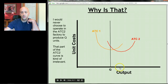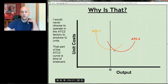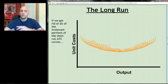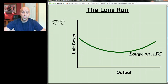Similarly, if I wanted to produce a higher quantity, the cost would actually be lower in the red factory than in the orange one. So I can eliminate that portion of the orange curve, because I would never choose to be in the smaller factory once my output goes beyond a certain amount. If I erase all the irrelevant portions of those infinite curves, what I'm left with is the long run average total cost curve.